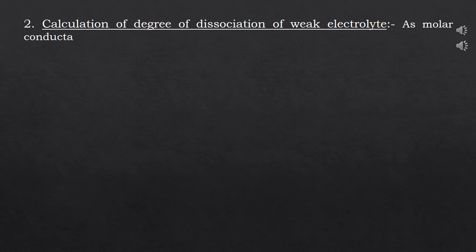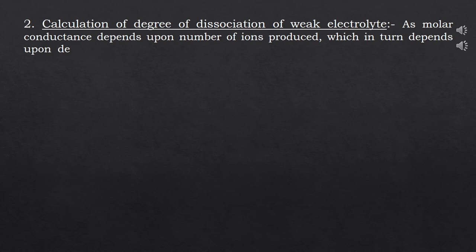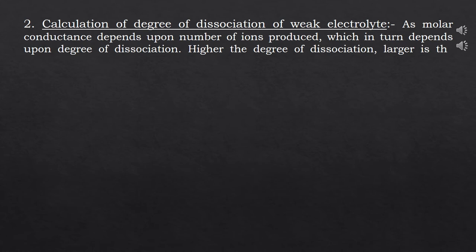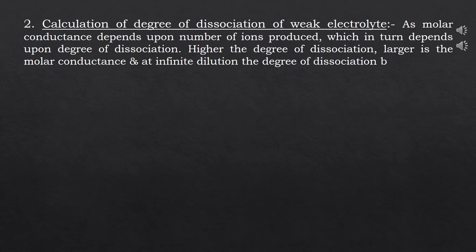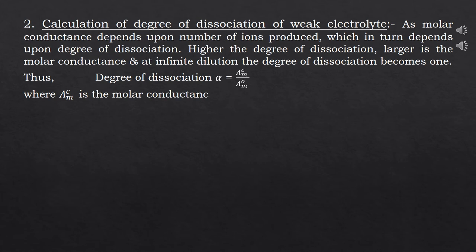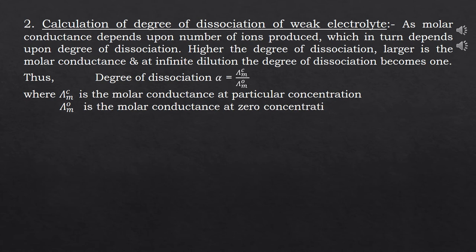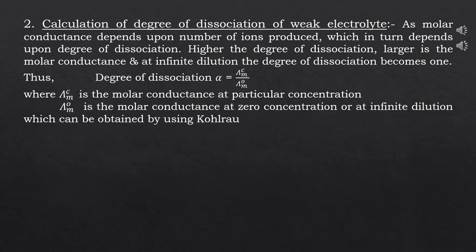The second application of Kohlrausch's law is the calculation of degree of dissociation of a weak electrolyte. Molar conductance depends upon the number of ions produced, which in turn depends on the degree of dissociation. So, higher the degree of dissociation, larger is the molar conductance. At infinite dilution, the degree of dissociation becomes 1, i.e., unity. Thus the degree of dissociation α equals λMc divided by λM0, where λMc is the molar conductance at a particular concentration and λM0 is obtainable using Kohlrausch's law.